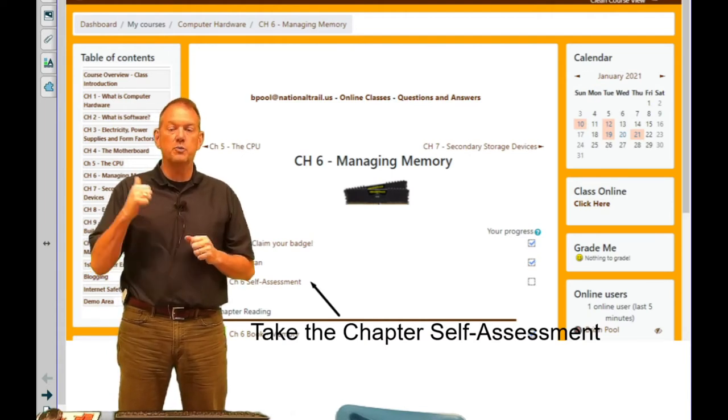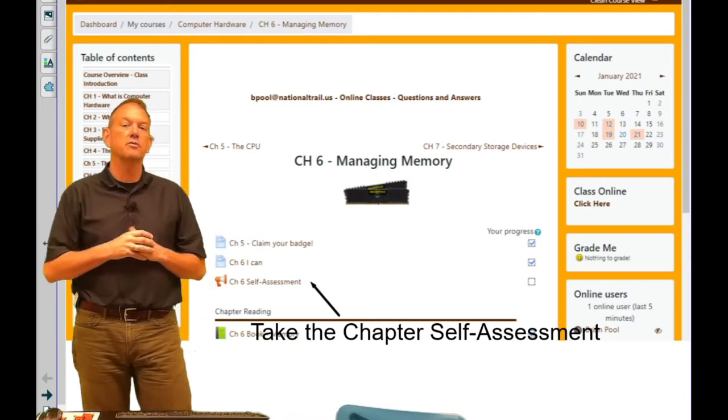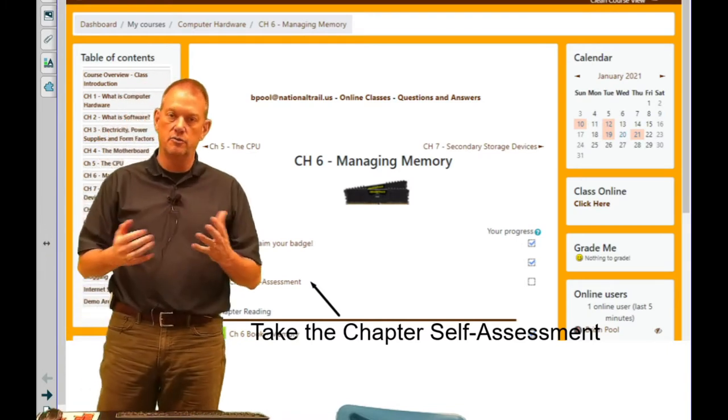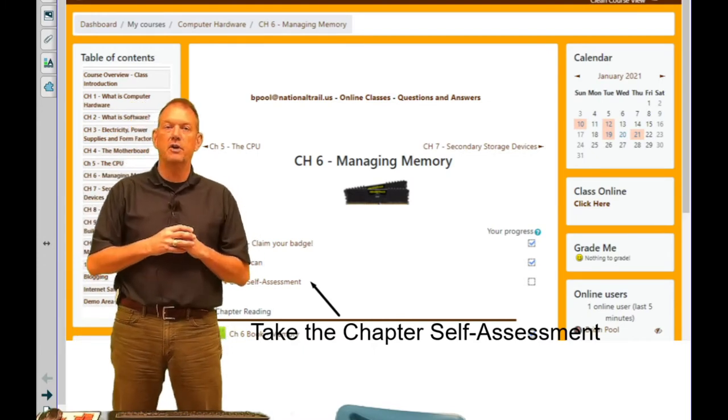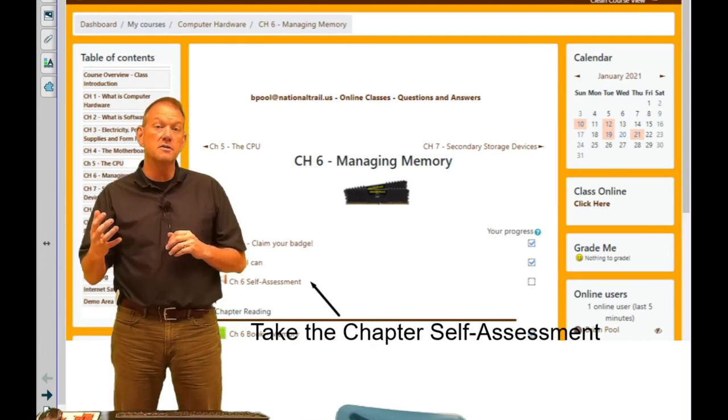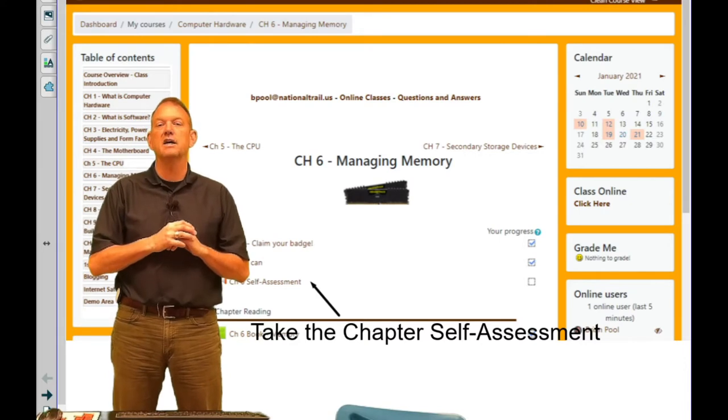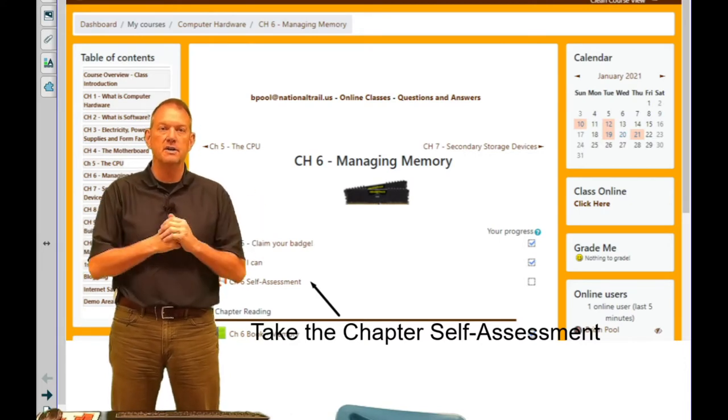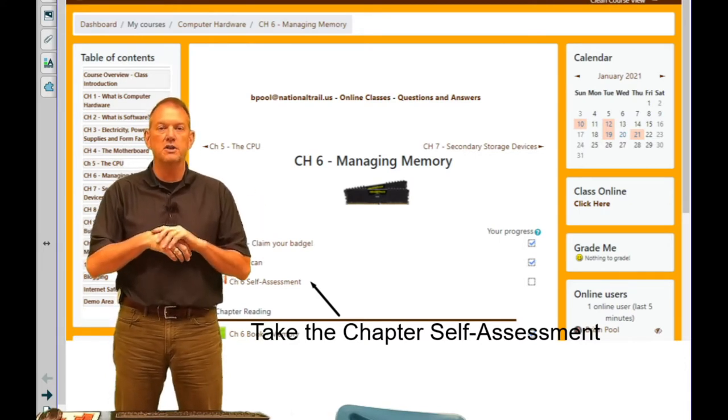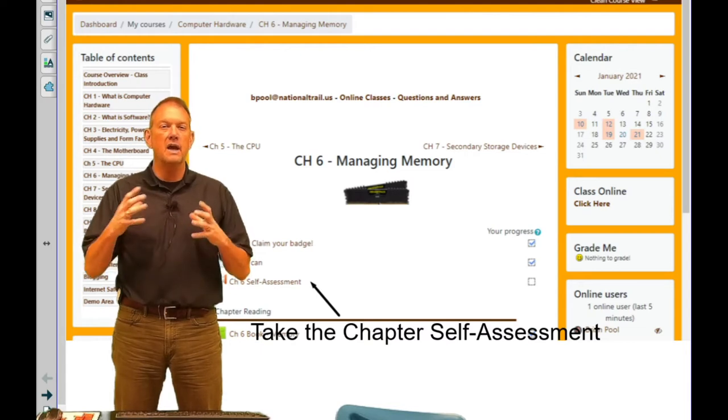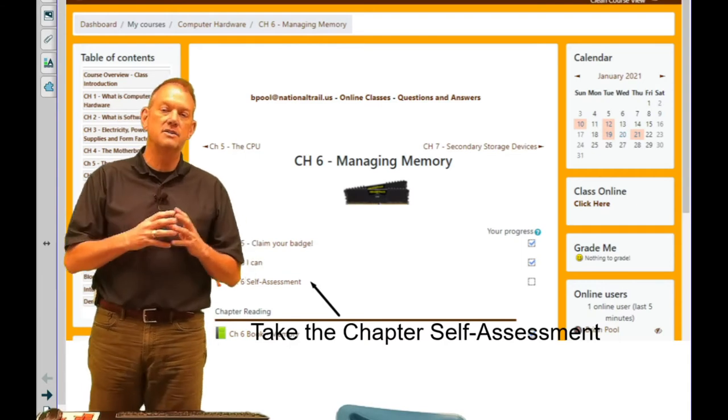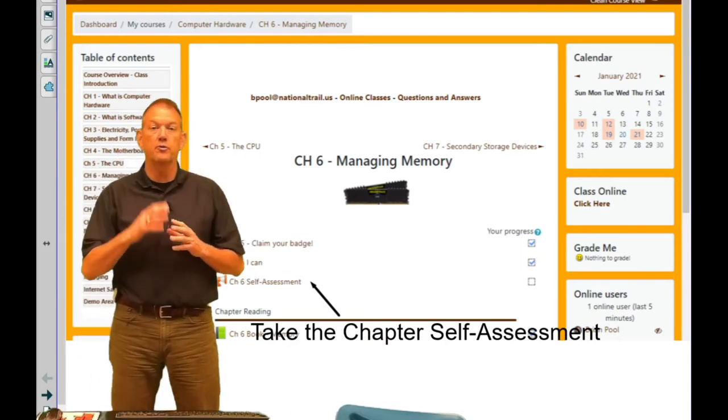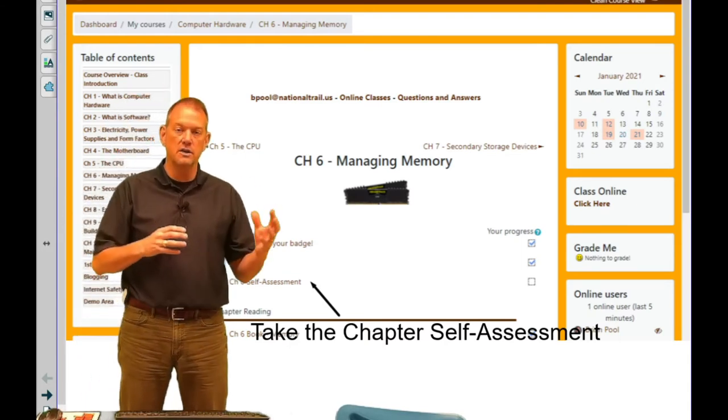Memory is primary storage, and also remember memory is volatile storage, meaning that it goes away very easily. Memory is refreshed, at least system memory is refreshed thousands of times a second. We'll actually talk about how many times that's refreshed here in the chapter. Cache memory? Not really. We'll learn why in this chapter as well, but memory is considered primary storage and volatile storage.